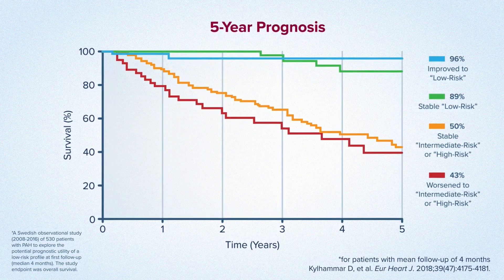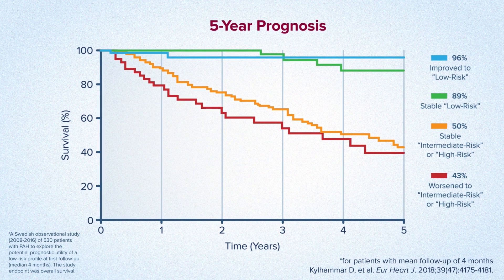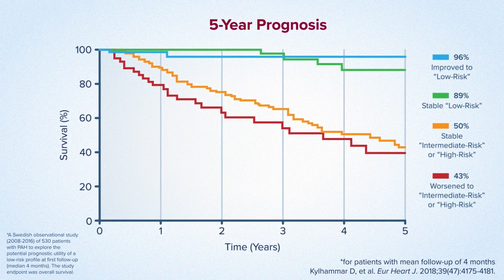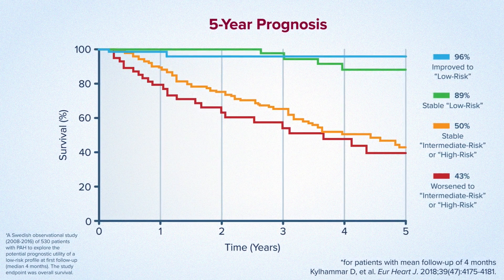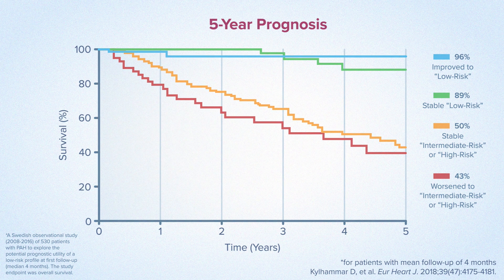Multiple registries tracking large patient cohorts have shown a distinct improvement in five-year prognosis when patients improve their risk status, particularly when improvement is achieved in the first year of therapy.